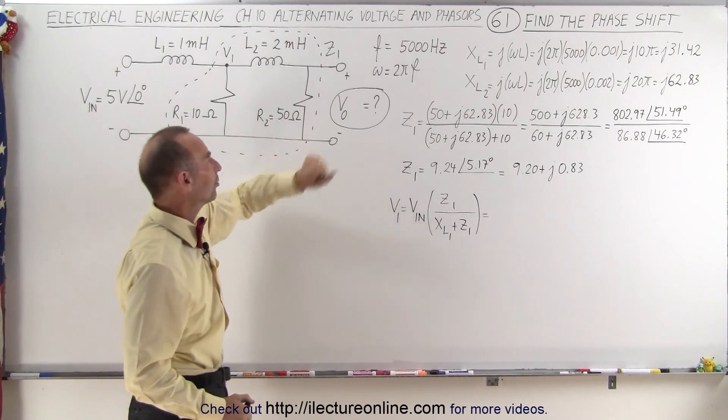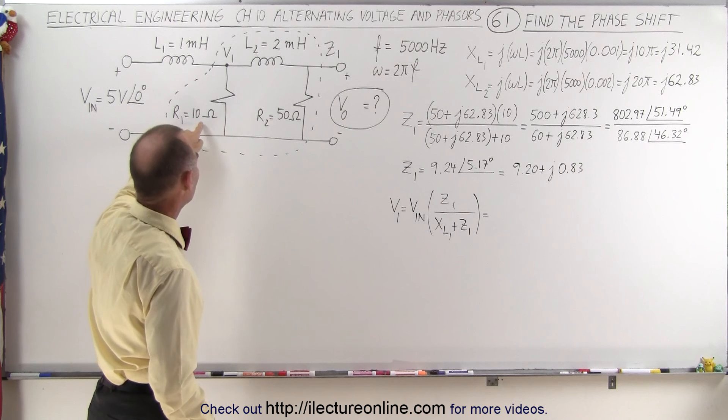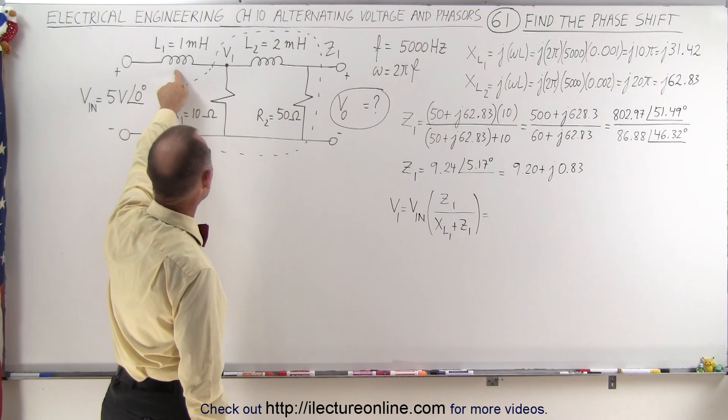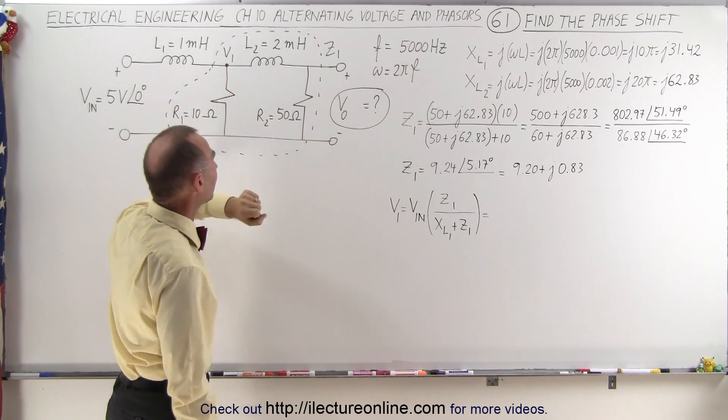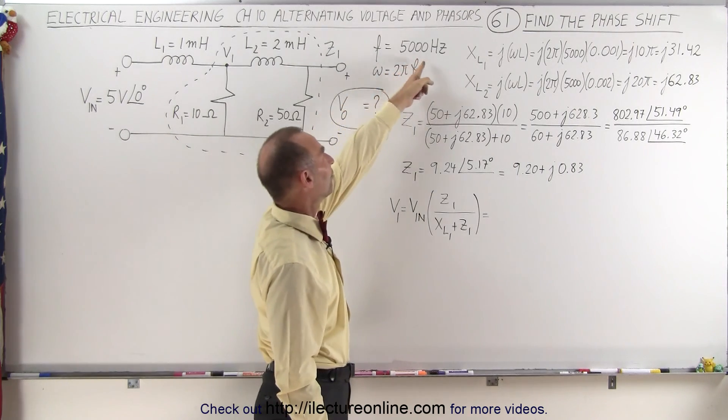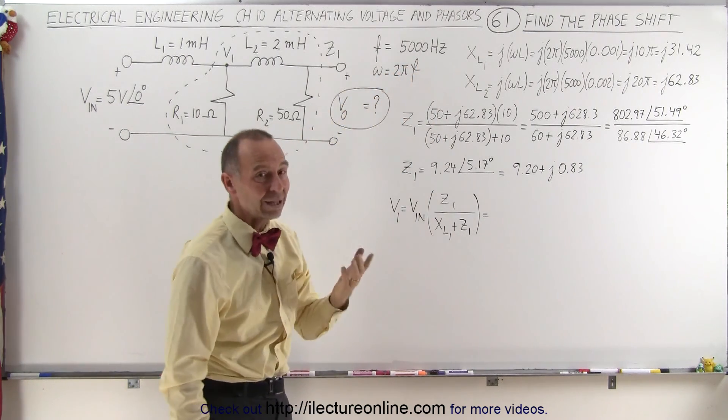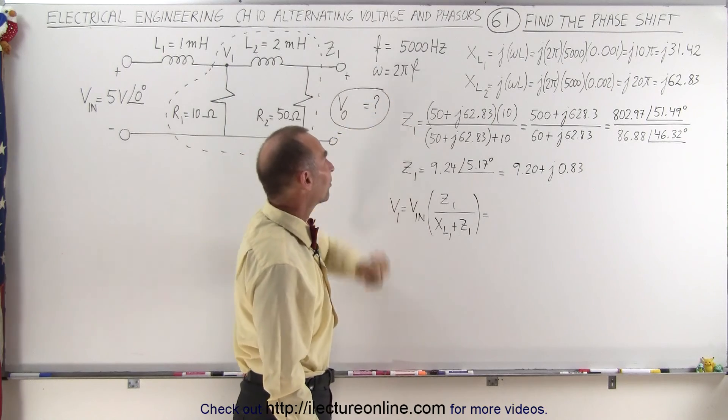We're trying to find the output voltage. We have two resistors, 10 ohms and 50 ohms. We have two inductors, 1 millihenry and 2 millihenry. The frequency is 5000 Hz, so the angle of frequency would be 2π times 5000 Hz.